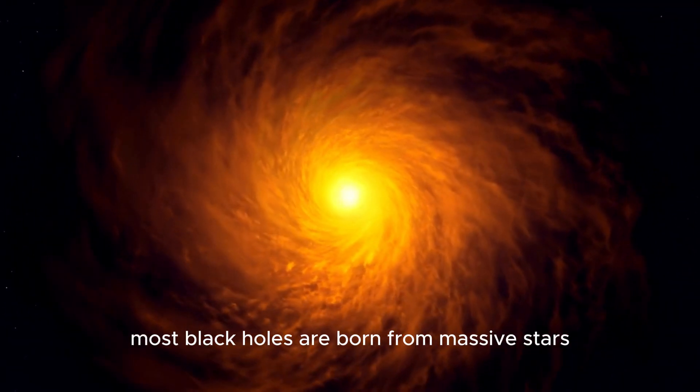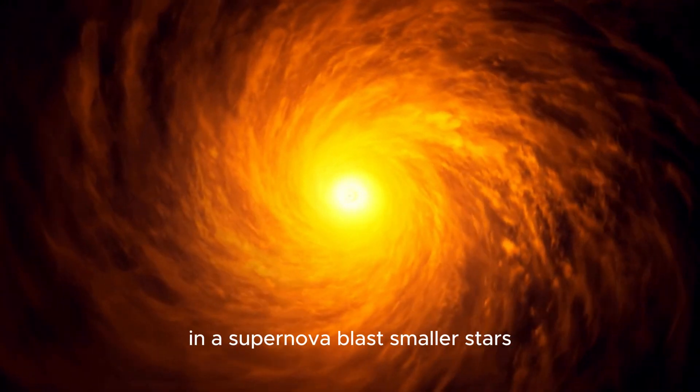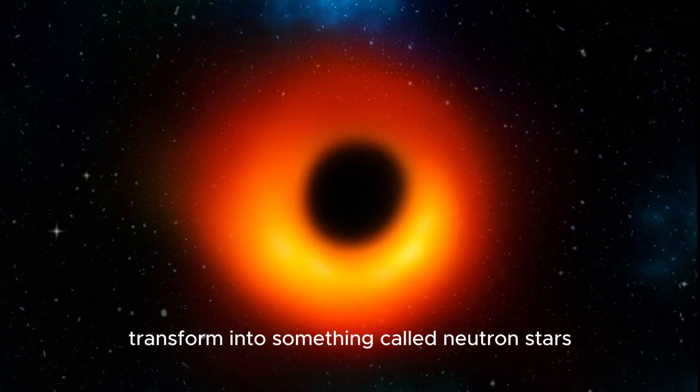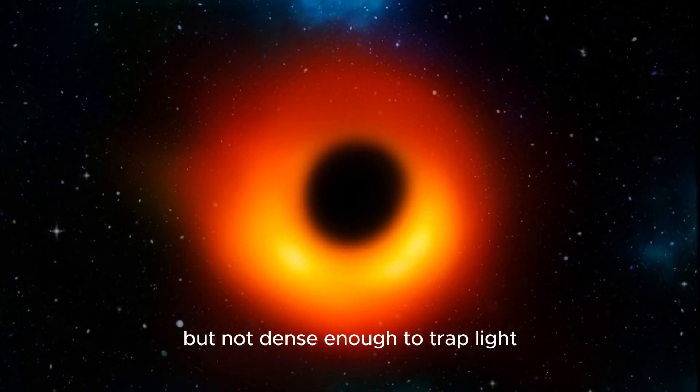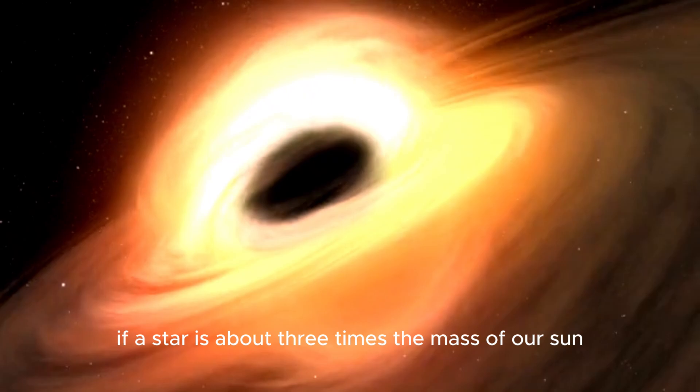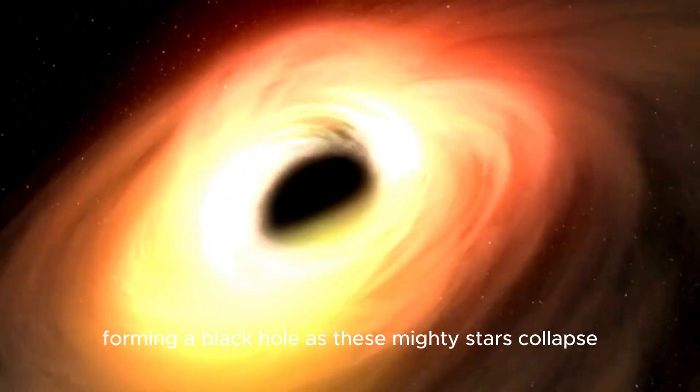Most black holes are born from massive stars that have reached their celestial retirement party in a supernova blast. Smaller stars, when they die, transform into something called neutron stars, which are super dense but not dense enough to trap light. However, if a star is about three times the mass of our sun, it collapses under its own gravitational pull, forming a black hole.